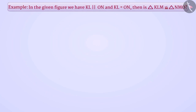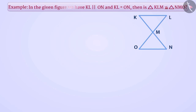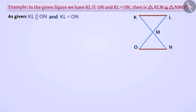Next example: In the given figure, KL and ON are parallel and KL is equal to ON. Is triangle KLM congruent to triangle NMO? We observe that the line segment KL is parallel to the line segment ON.